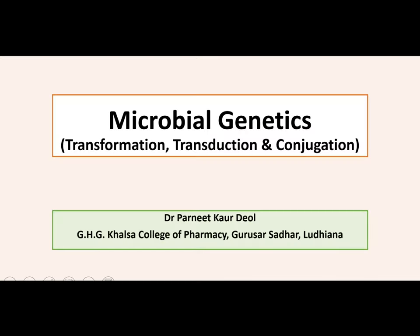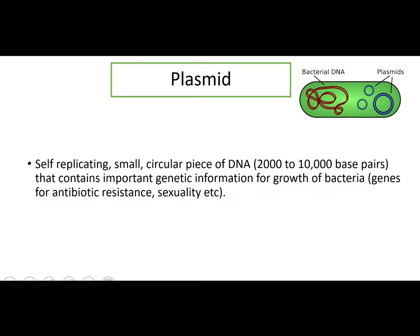Today we are going to discuss the second type of genetic recombination, but before discussing the second type I want to brief you about one term which is called plasmid. A plasmid, by definition, is a self-replicating small circular piece of DNA with a size ranging from 2000 to 10,000 base pairs that contains important genetic information for growth of bacteria.